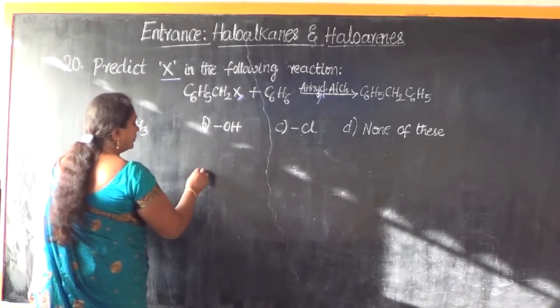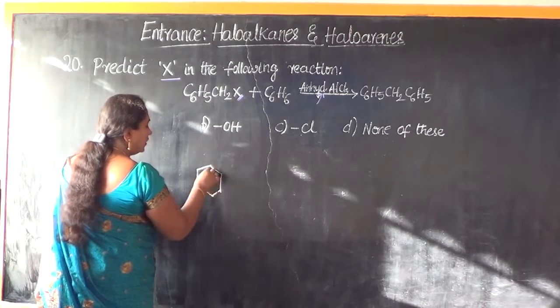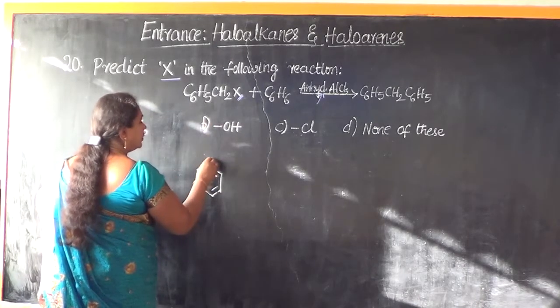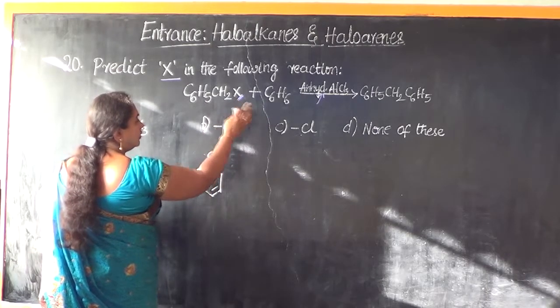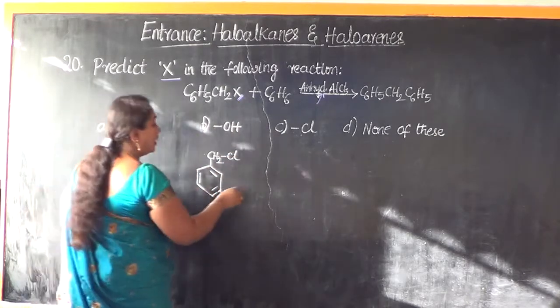So, let us write the reaction. I am writing it with the help of the benzene ring. Now, C6H5 because one hydrogen is gone and in that place, CH2 and instead of X, it is going to be Cl because it is the member of the halogen.